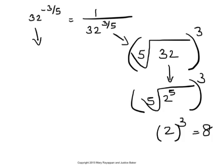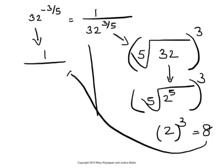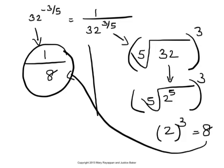So the original expression, 32 to the power negative three-fifths, will be 1 divided by 8 — that would be the value of the given expression, 32 to the power negative three-fifths. I hope this helps. Thank you.